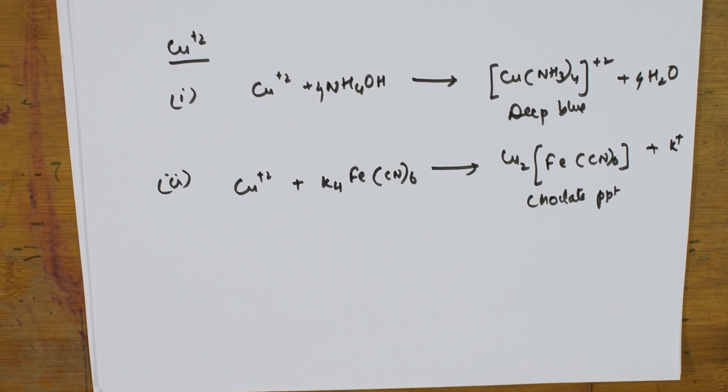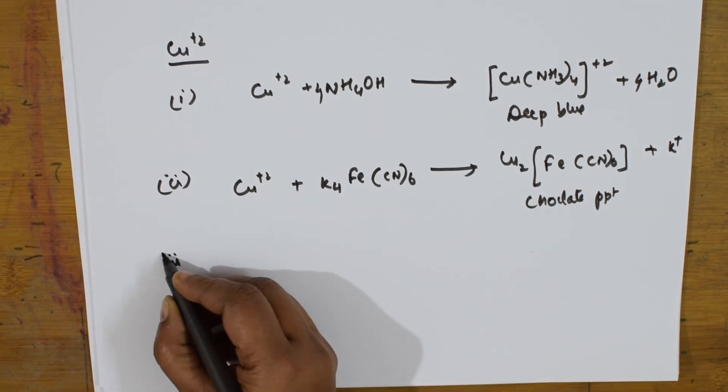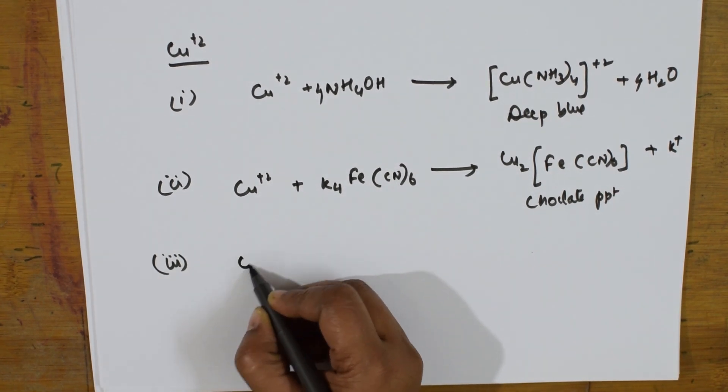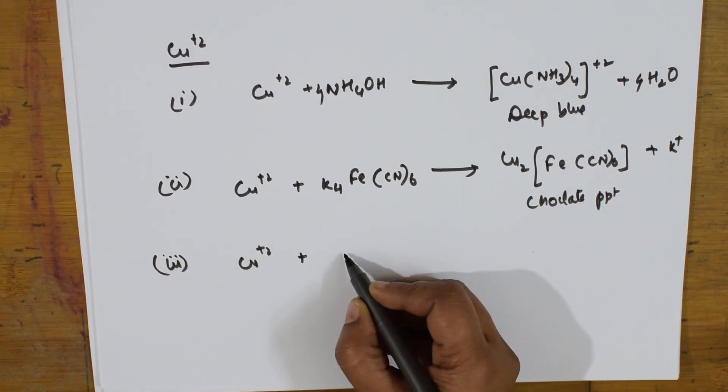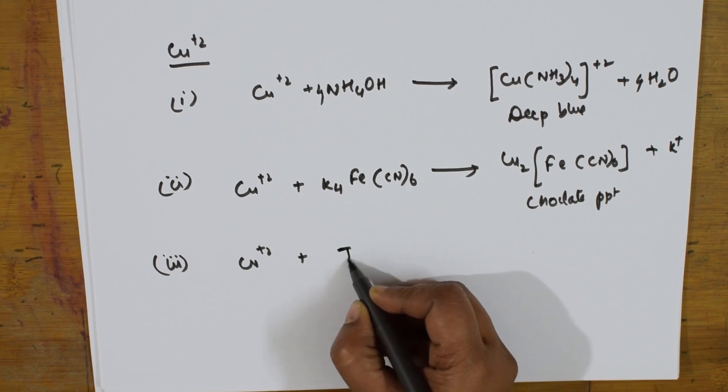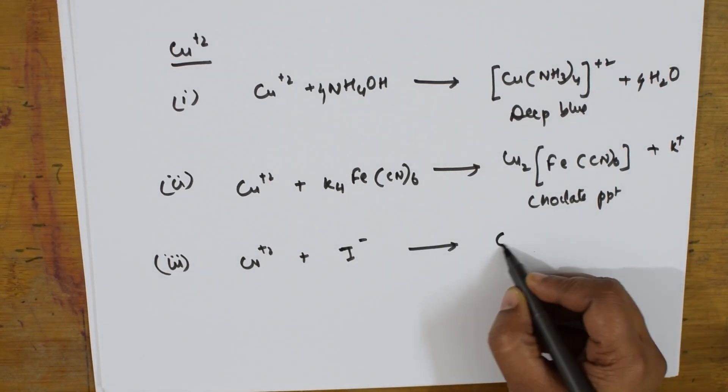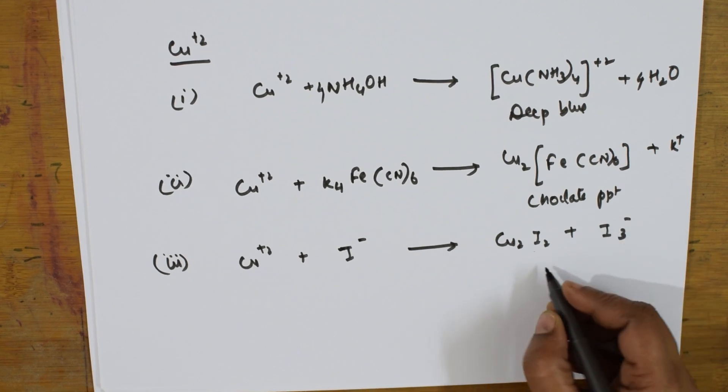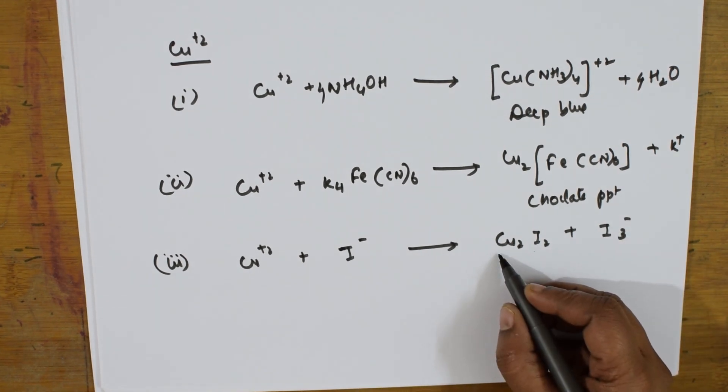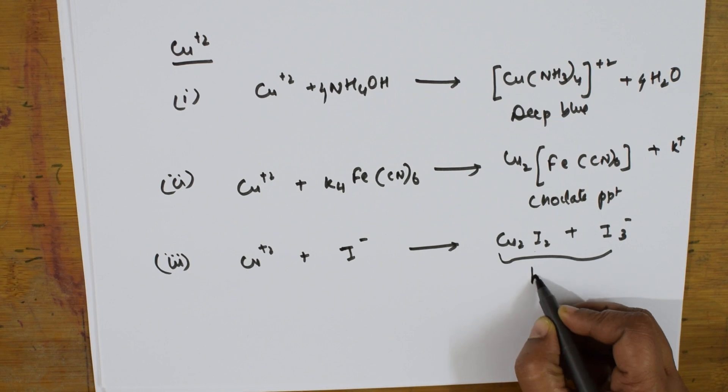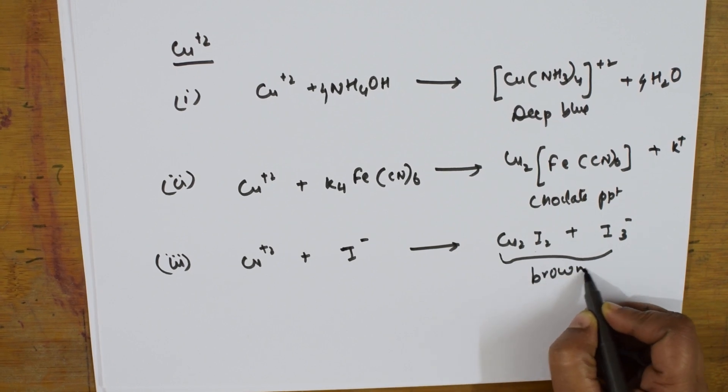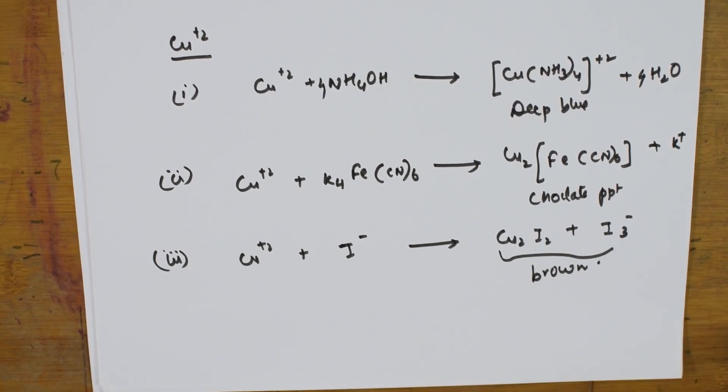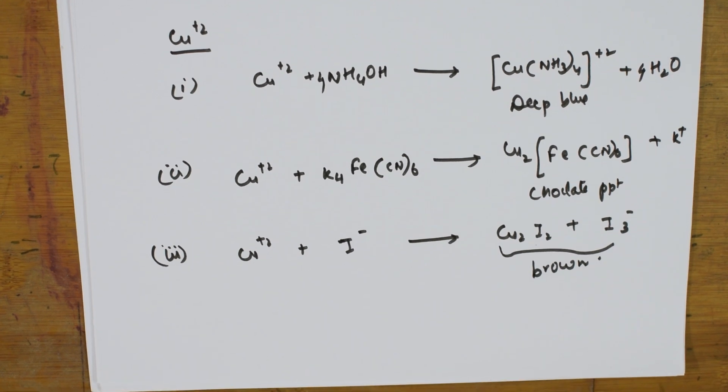This is the test for copper. Then still test where you can test it with iodide, potassium iodide. Cu²⁺ plus I⁻, you will be getting 2I₂ plus I₃⁻. What is the color of this? The color of this is brown in color.